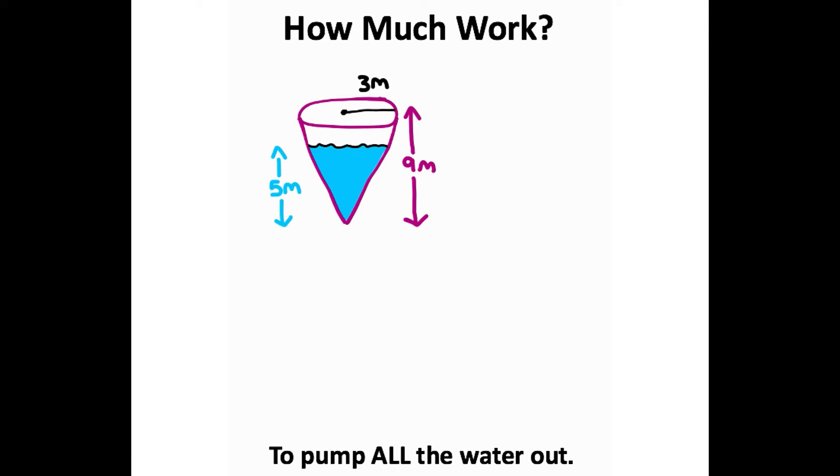What's also given here, which you can calculate pretty easily, is the height of the water distance to the top of the cone. You can see that's just going to be 9 minus 5, which is 4.